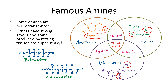A couple of other amines with pretty funny names are the molecules related to rotting tissue. Putrescine is an amine that comes off rotting fish, and cadaverine — obviously named because it's a molecule found coming off rotting cadavers. So there you go, some interesting amines in the world around you.